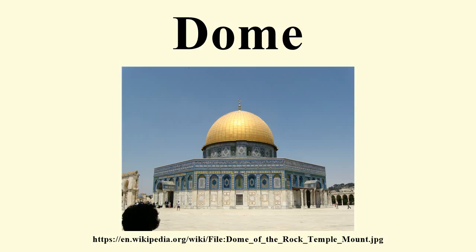Pendentives. Domes with pendentives can be divided into two kinds: simple and compound. In the case of the simple dome, the pendentives are part of the same sphere as the dome itself. However, such domes are rare. In the case of the more common compound dome, the pendentives are part of the surface of a larger sphere below that of the dome itself and form a circular base for either the dome or a drum section.